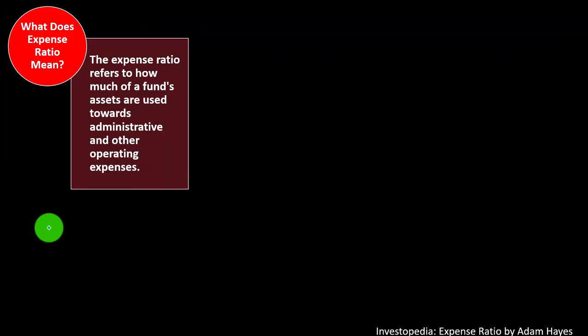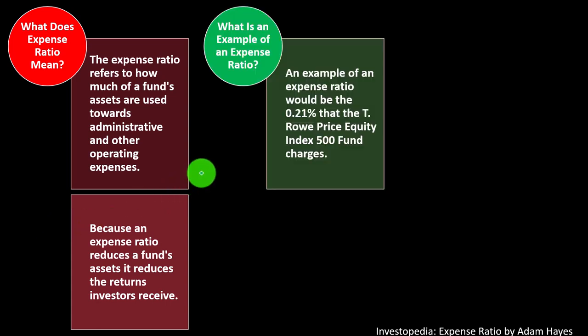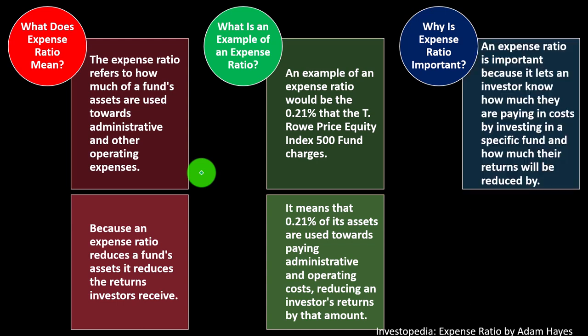To summarize: the expense ratio refers to how much of a fund's assets are used toward administrative or other operating expenses. Because an expense ratio reduces the fund's assets, it reduces the returns investors receive. An example of an expense ratio is the 0.21% that the T. Rowe Price Equity Index 500 Fund charges, meaning 0.21% of its assets are used toward paying administrative and operating costs, reducing an investor's returns by that amount.